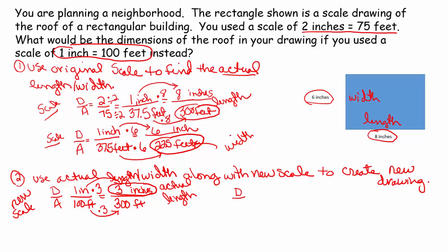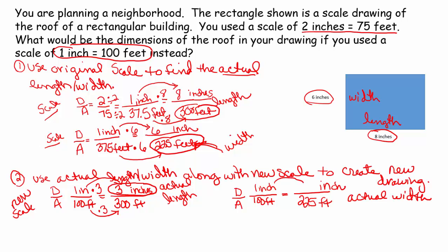Now I have to find the width. Drawing over actual — I'm going to use my new scale again: 1 inch is 100 feet. The actual width I found in Step 1 was 225 feet. How do I get from 100 to 225? I multiply by 2.25. So I multiply the numerator by 2.25 as well: 1 times 2.25 is 2.25 inches. The dimensions of the new drawing will be 3 inches by 2.25 inches.